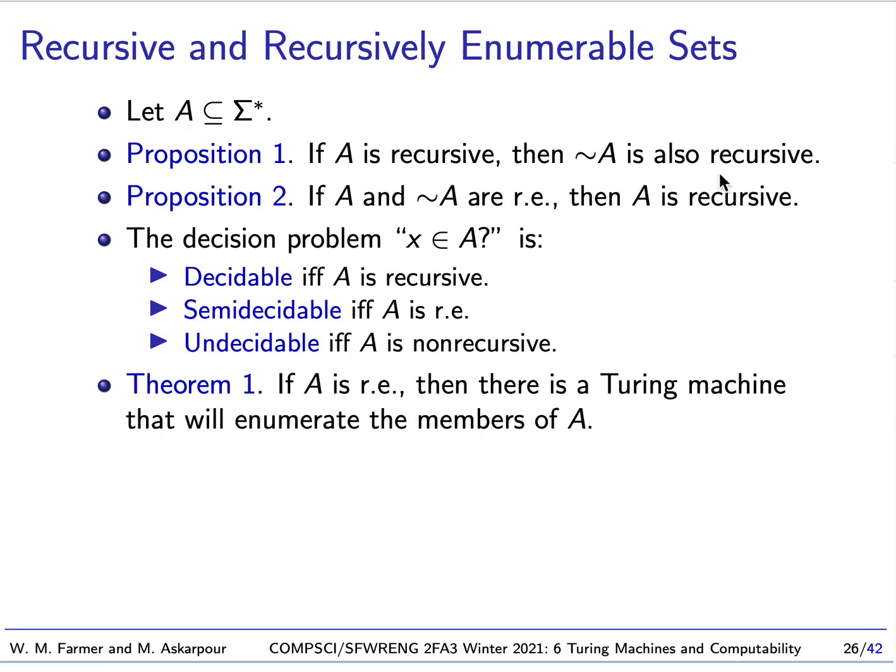A total Turing machine is a Turing machine that accepts or rejects every input. In general, Turing machines can also, in some cases, loop, so there's a third possibility. Total Turing machines don't have that possibility.